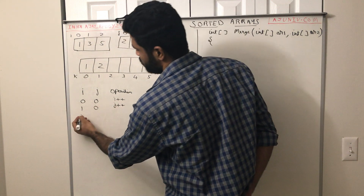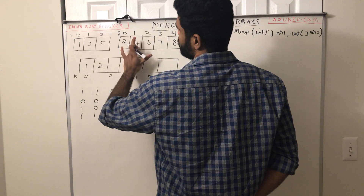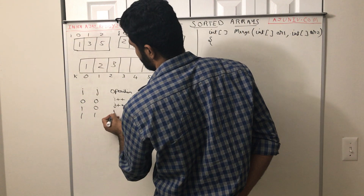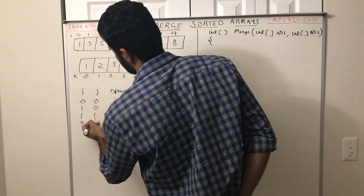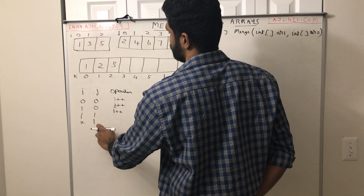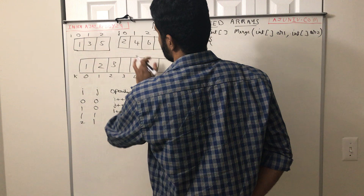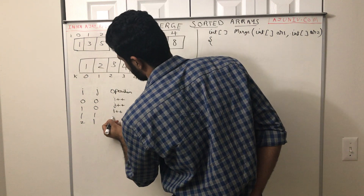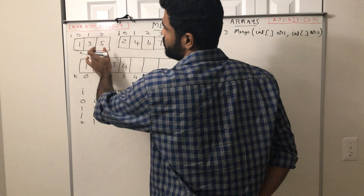Now I is 1 and J is incremented to 1. We compare 3 and 4 — 3 is less than 4, so we add 3. We got the element from the first array so we increment I++. After I++, I becomes 2 and J is still 1. Now we compare the element at index 2 of the first array with the element at index 1 of the second array — that's 5 with 4. Since 4 is less than 5, we add 4. We added it from the second array so we increment J. If we add an element from the second array we increment J; if from the first array we increment I.